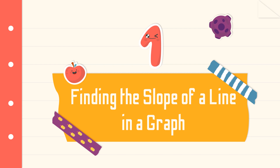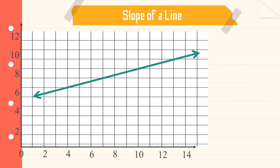We have three ways in order for us to determine the slope of a line depending on the given. For the first one, we are going to find the slope of a line from a graph. So, let us determine how to get the slope when the graph of the linear equation is given. This is the graph of the first example.